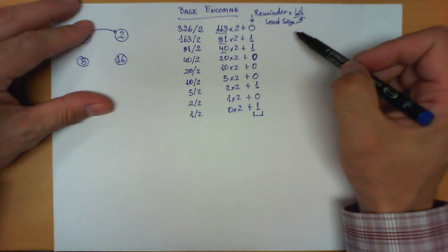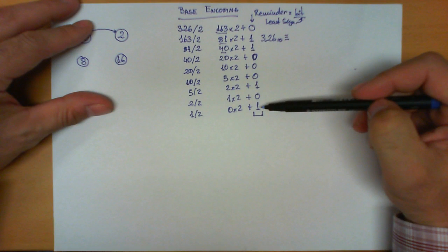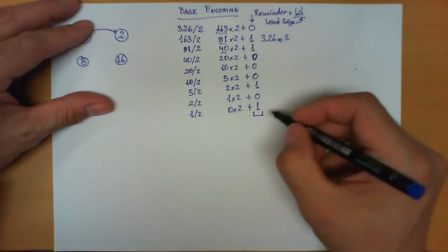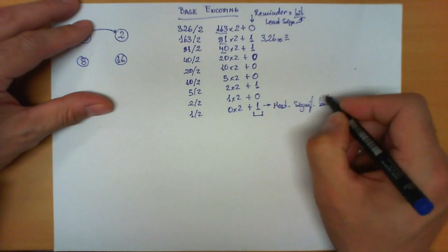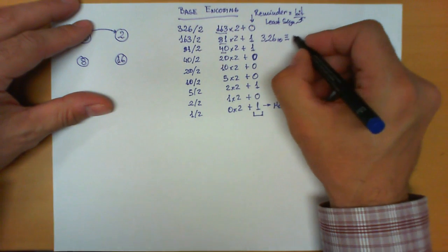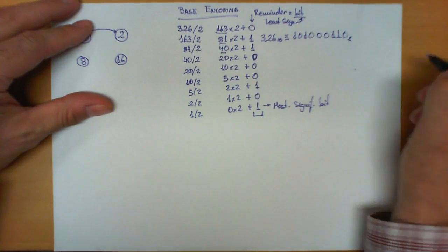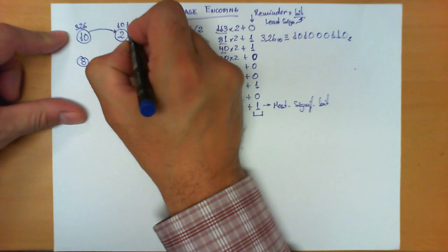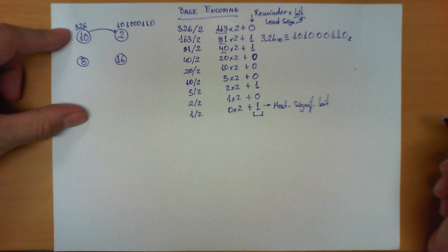This sequence of remainders is precisely the sequence of bits that encodes the number 326 in base 10 into binary. The thing to remember is that the order in which we obtain these remainders is from least significant bit to most significant bit. Therefore, the number has to be written starting from the bottom all the way to the top. So 326 in base 10 is 101000110 in base 2.